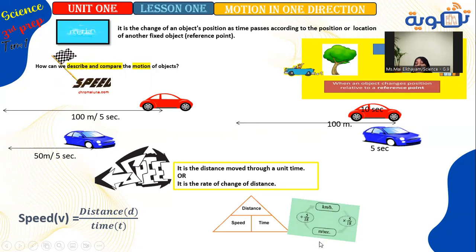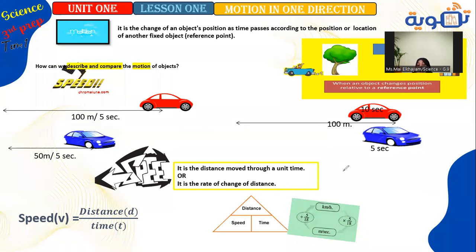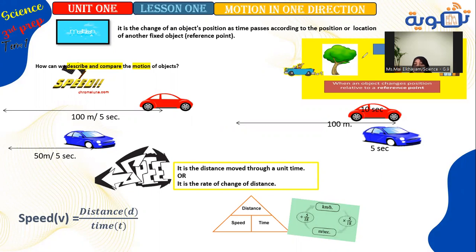To change from kilometer per hour to meter per second, multiply by 1,000 to convert kilometers to meters, and multiply by 60 by 60 in the denominator to convert hours to seconds. This gives you the factor 5 over 18. To change from meter per second to kilometer per hour, divide by the same factor 5 over 18.